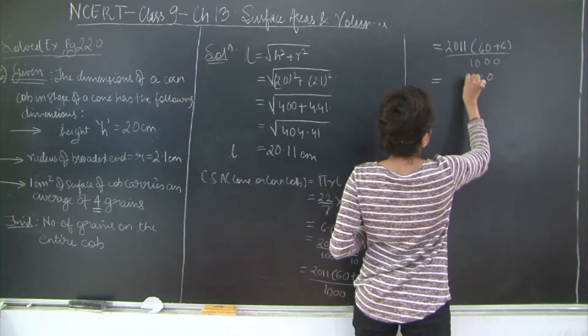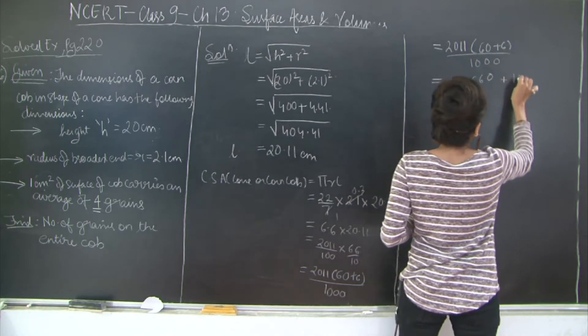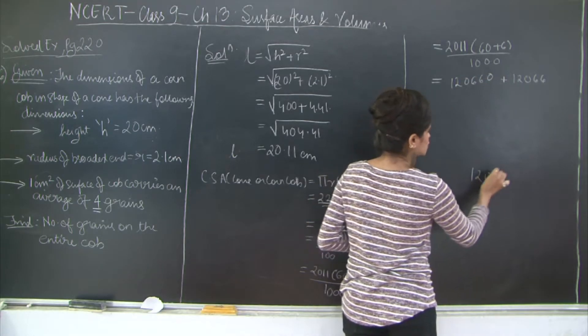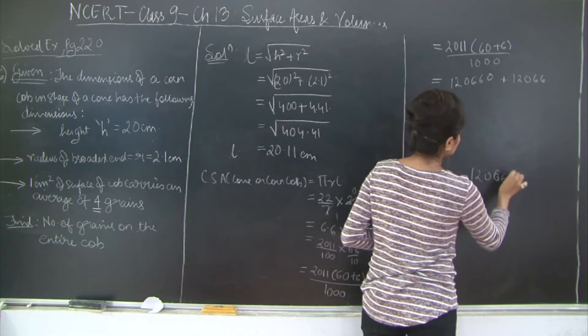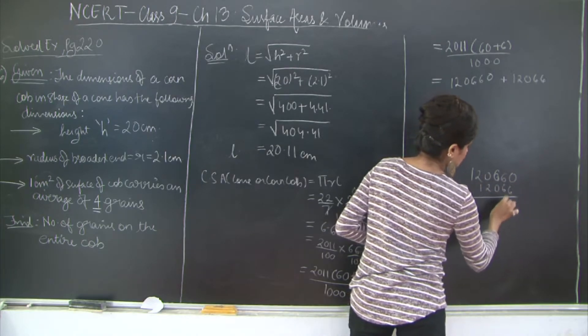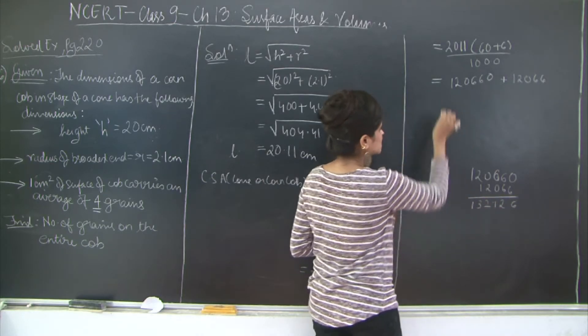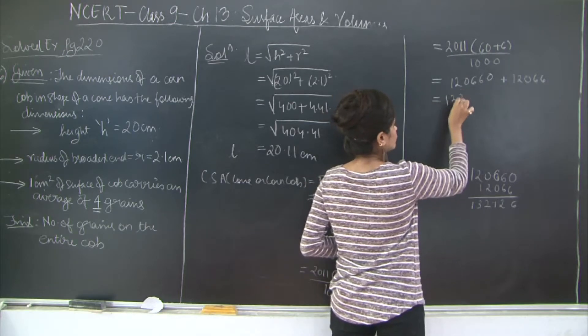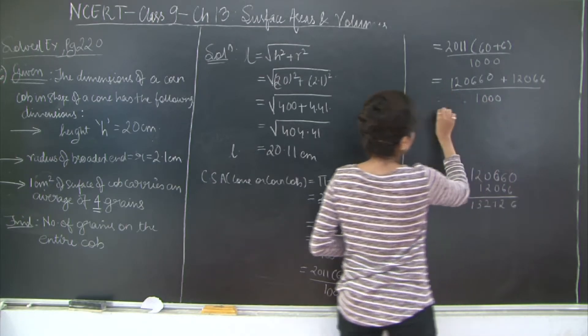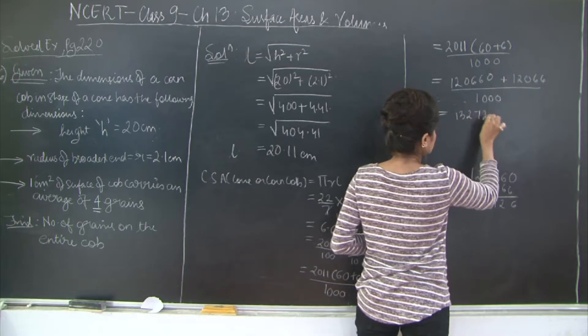6 ones are 6, 6 ones are 6, 6 ones are 6, 0. 6 twos are 12, 12 plus 1, 2, 0, 6, 6, 6. So adding these two numbers 120660 and 12066, you get 132,726. So 132,726, this is upon 1000.